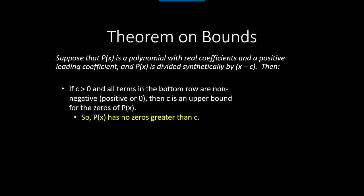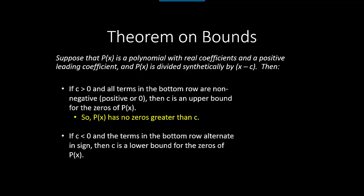That means we have no zeros greater than c, so we can eliminate not just c itself but anything on our list greater than that number. Then, if we divide by a negative c value, we look for whether the terms in the bottom row alternate in sign — and a zero can count as either sign. If they do alternate, then c is a lower bound, and we can eliminate anything less than c. With a list of 32 potential zeros, these ideas help us eliminate much more than just the number we tried.